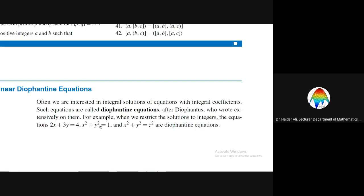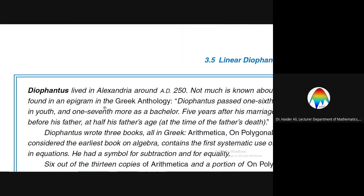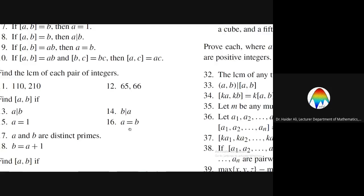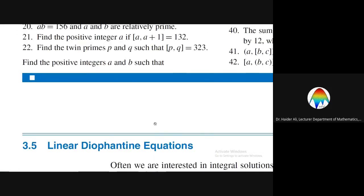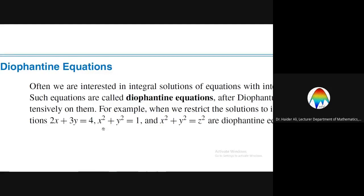For example, when we restrict solutions to integers, the equation 2x plus 3y equals 4 is a linear Diophantine equation because degrees are one, coefficients are integers, and we are only interested in those values of x and y which are integers.